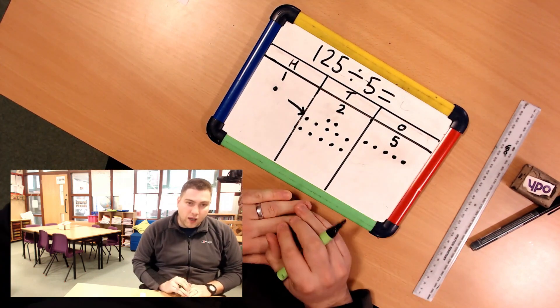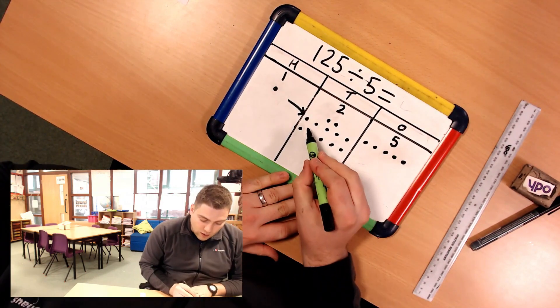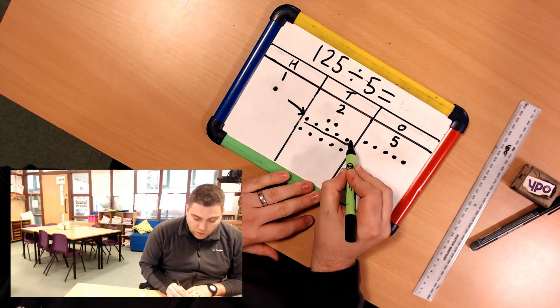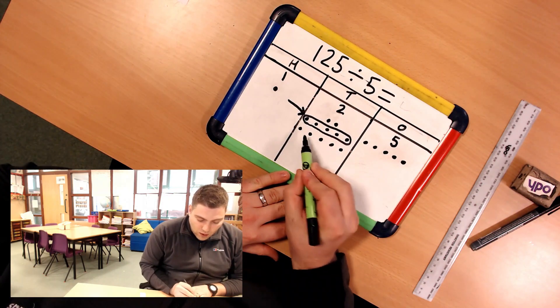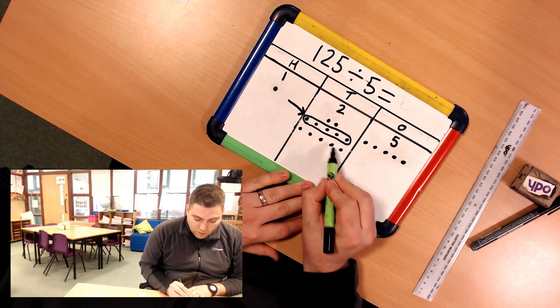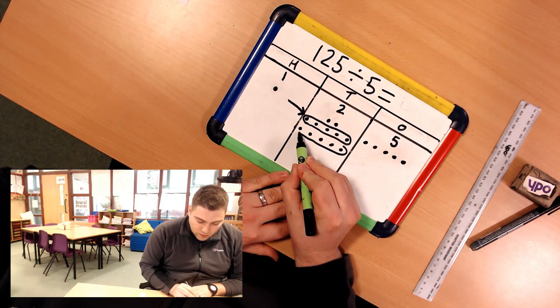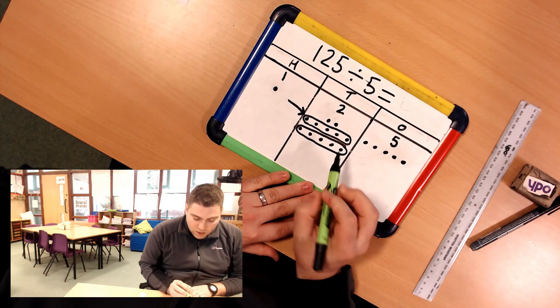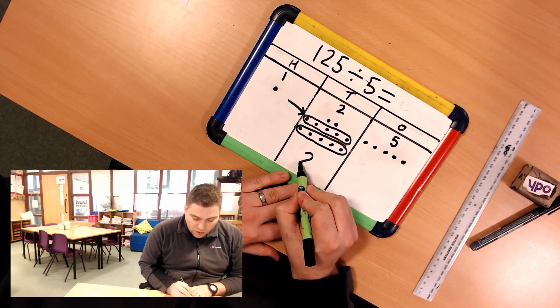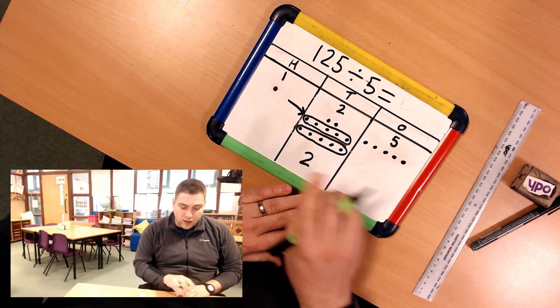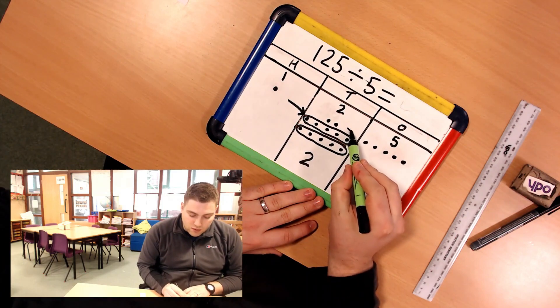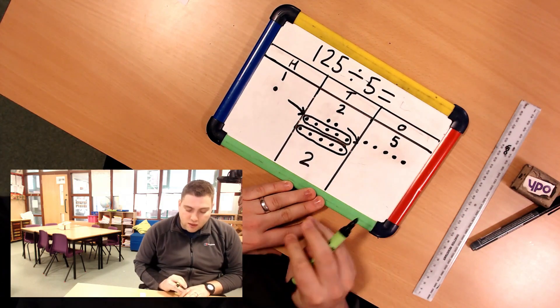I can now make equal groups of 5. So I'm going to group in 1, 2, 3, 4, 5, 1, 2, 3, 4, 5 which means I have two equal groups in my 10s but I've still got two that I need to exchange over. So now I've got two 10s that I need to exchange into my 1s.